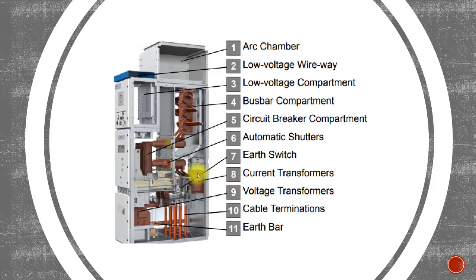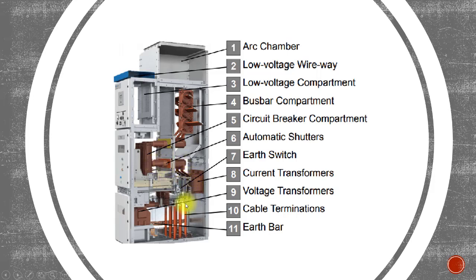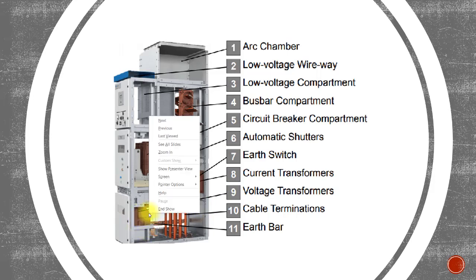Number eight is the current transformer. You can see the cable coming in, going into the CT, and then coming out. The current transformer is connected in series, so you will find two connections — one incoming and one outgoing. You can recognize a current transformer from a voltage transformer because the CT has two terminals since it is in the current circuit and must be in series.